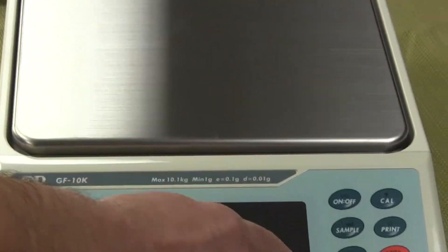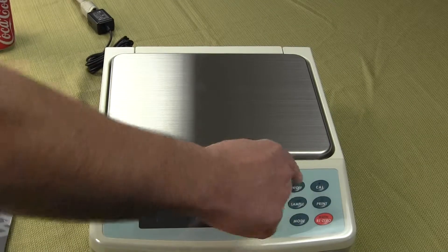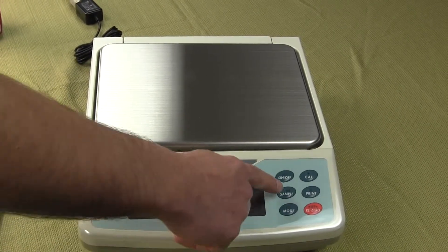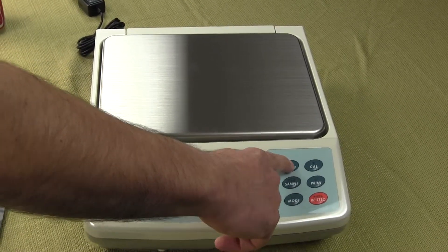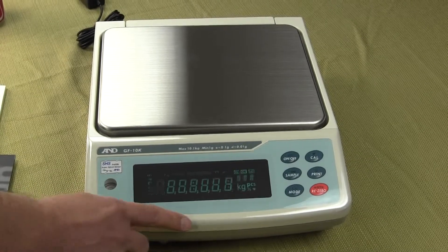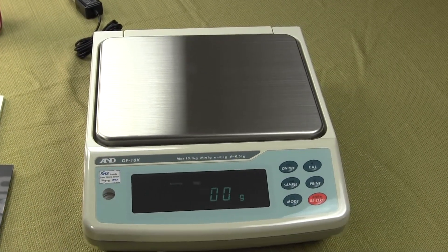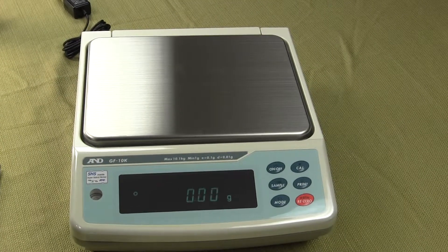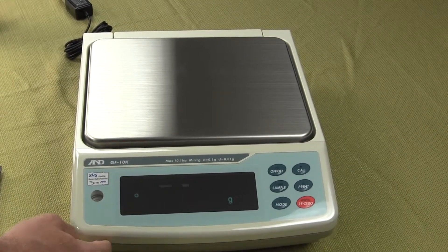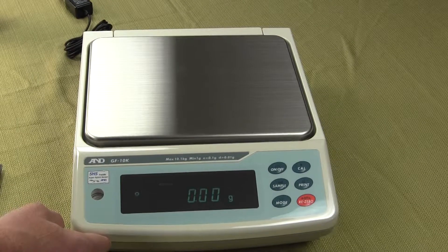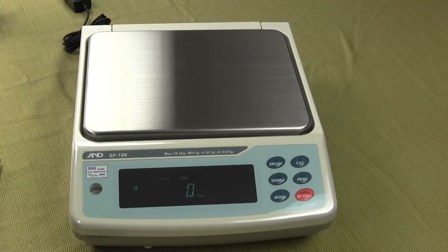To power up the balance, you can see we just have basically these six buttons right in the front. We have the on button. When the balance powers up, all the segments illuminate. And then the balance goes to zero. Now, we can go through the calibration and also changing weight modes. Let me just show you how to change the weight modes.